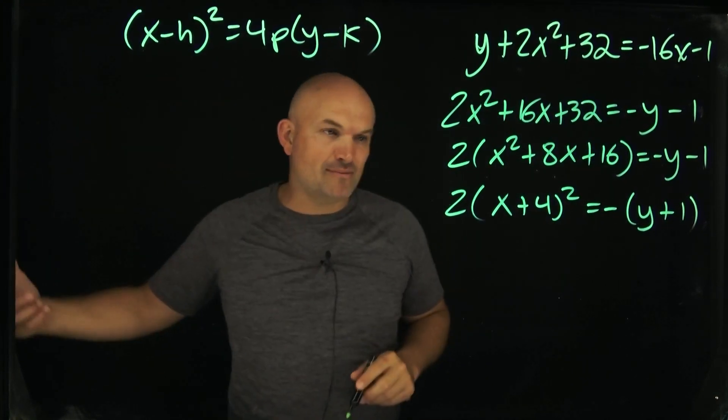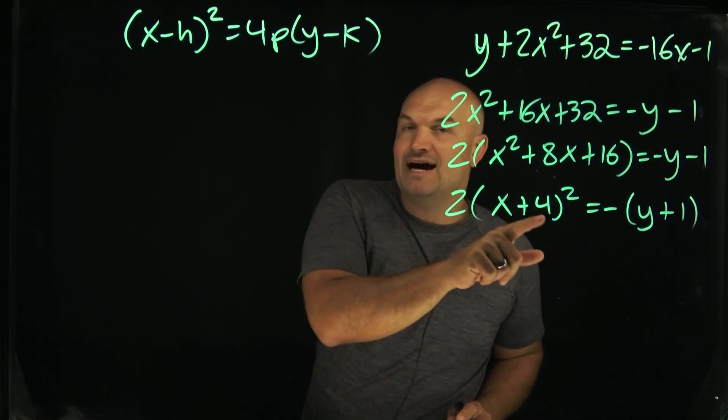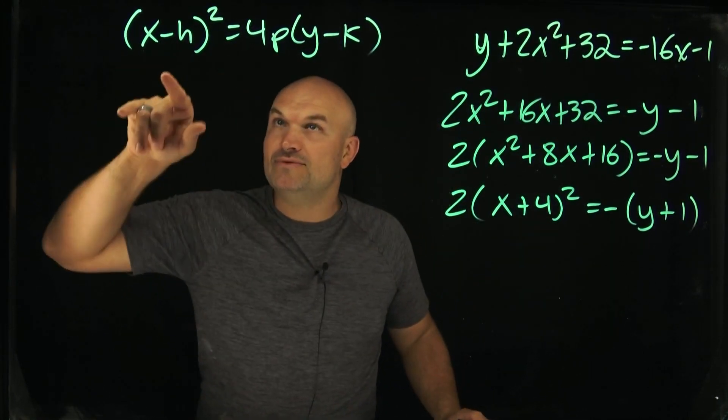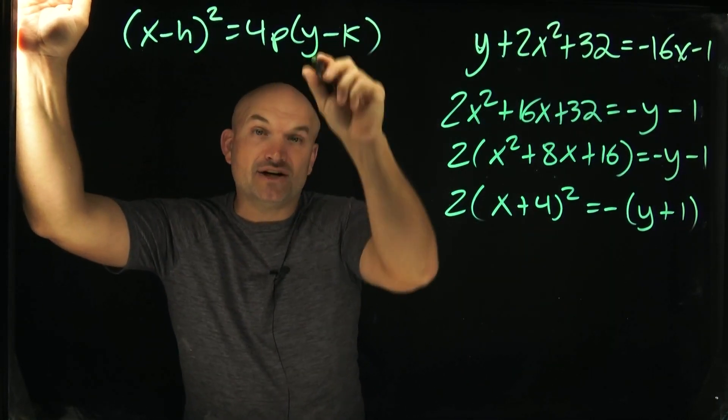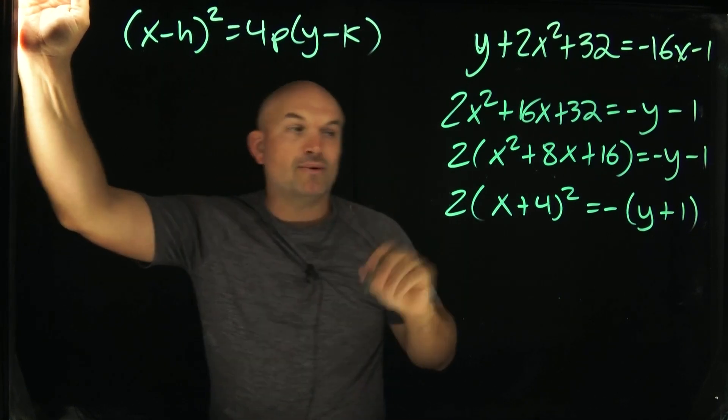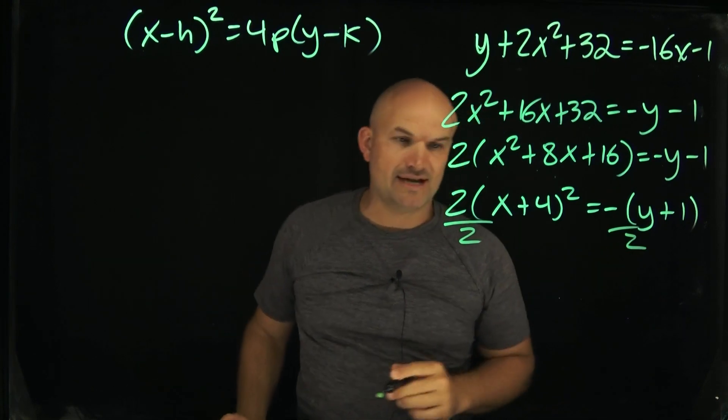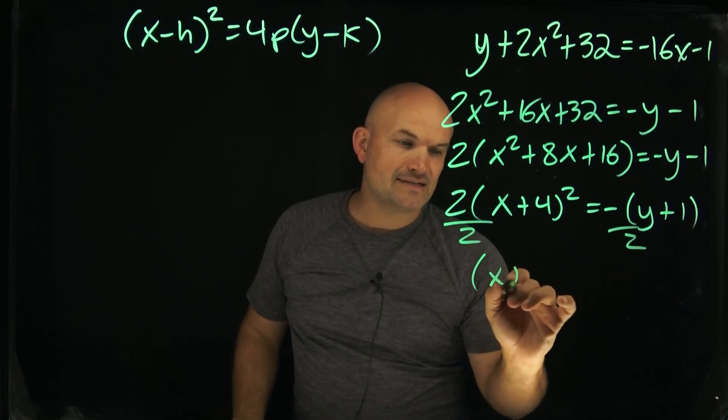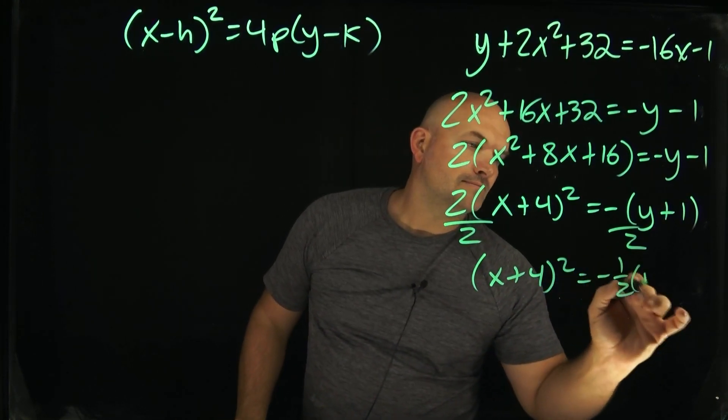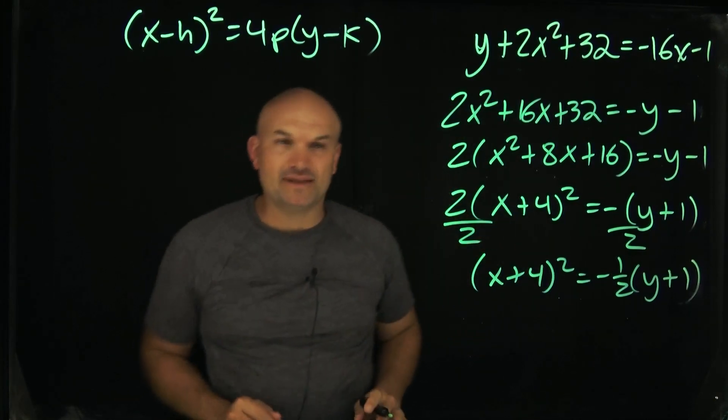However, the next mistake students will make is they'll leave the coefficient for the on the square term. Do you guys look over in this form that the coefficient is in front of the linear term, not my square term? So what I need to do then to put this into my standard form is I need to divide by two on both sides. But now I get x plus four squared equals negative one half times y plus one.